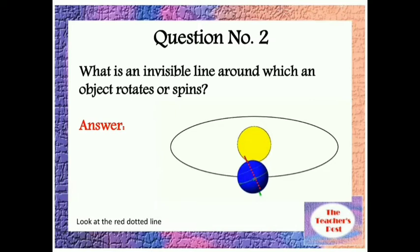Question number two: What is an invisible line around which an object rotates or spins?